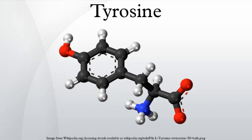Precursor to neurotransmitters and hormones: in dopaminergic cells in the brain, tyrosine is converted to L-DOPA by the enzyme tyrosine hydroxylase, the rate-limiting enzyme involved in the synthesis of the neurotransmitter dopamine. Dopamine can then be converted into the catecholamines norepinephrine and epinephrine. The thyroid hormones triiodothyronine and thyroxine in the colloid of the thyroid are also derived from tyrosine.